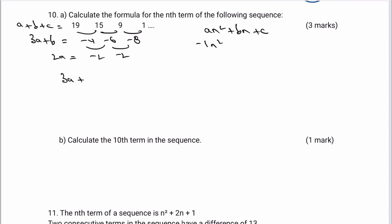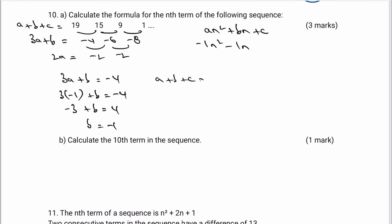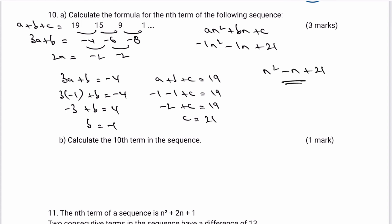To find b, using 3a plus b equals minus 4: that's 3 times minus 1 plus b equals minus 4, so minus 3 plus b equals minus 4. Adding 3 to both sides gives b equals minus 1. For c, using a plus b plus c equals 19: minus 1 plus minus 1 plus c equals 19, so minus 2 plus c equals 19, therefore c equals 21. The nth term is written as minus n squared minus n plus 21.